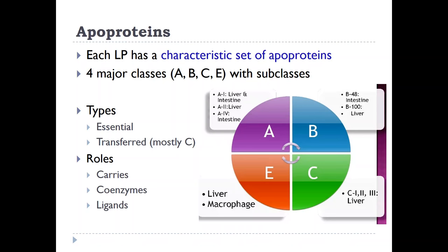Apoproteins play different roles. The major and most obvious one is as a carrier of lipid contents through the bloodstream. They also play a role as coenzymes — for example, ApoC2 is a coenzyme for lipoprotein lipase. And they also play a role as ligands — for example, ApoE and ApoB100 are both ligands for the LDL receptor, which we will be talking about later.